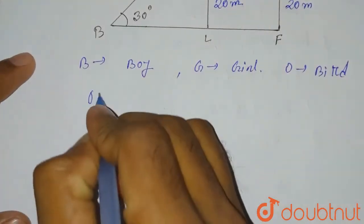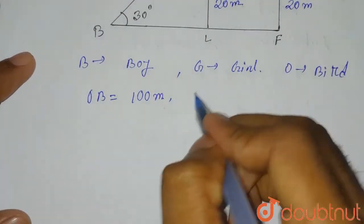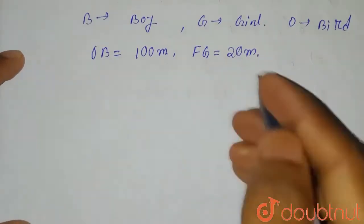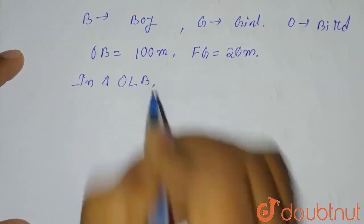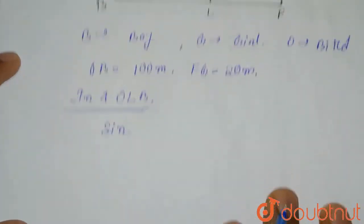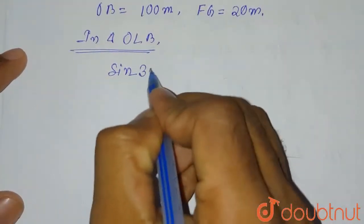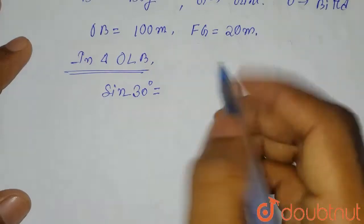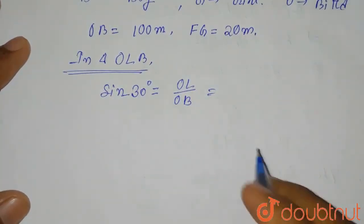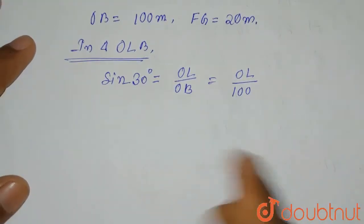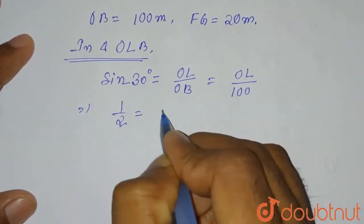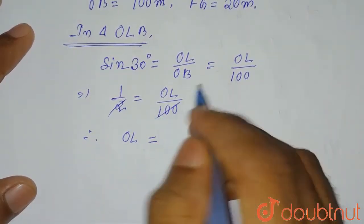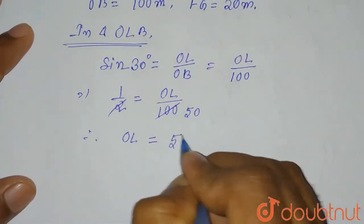Let me write the given dimensions: OB equals 100 meters, FG equals 20 meters. We'll apply sin theta in triangle OLB. So in triangle OLB, sin 30° equals perpendicular divided by hypotenuse, which is OL divided by OB. So sin 30° equals OL divided by 100. Since sin 30° equals 1/2, we get 1/2 equals OL divided by 100, therefore OL equals 50 meters.